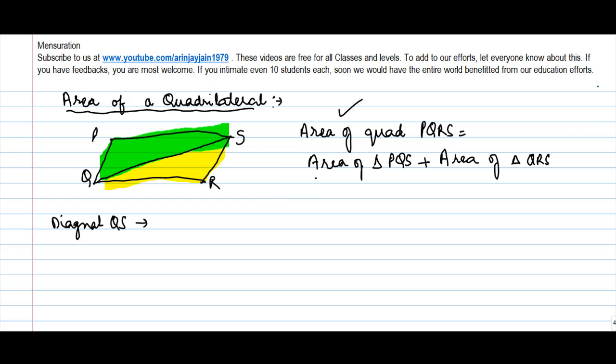Now, we know that area of a triangle is equal to half into base into height. So, this you need to do for triangle PQS, plus half into base into height. This you do for QRS.